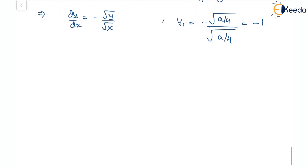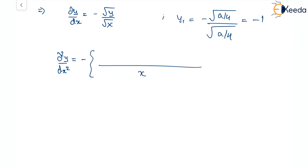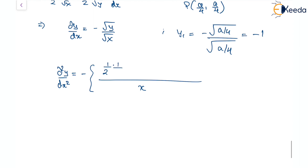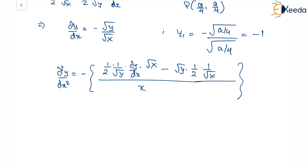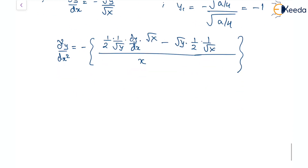Now for the second derivative, from dy/dx = −√y / √x we apply the quotient rule. d²y/dx² = −[ (√x · (1/2)(1/√y)(dy/dx) − √y · (1/2)(1/√x)) / x ].